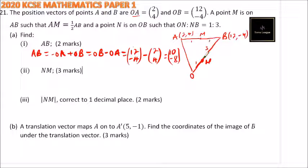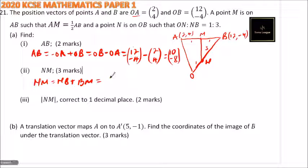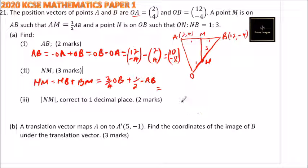Then we are supposed to find vector NM. We can say NM equals NB plus BM, which equals three-quarters of OB plus negative one-half of AB. OB is (12, -4) and our AB we have found is (10, -8). So we have three-quarters times (12, -4) minus one-half times (10, -8).